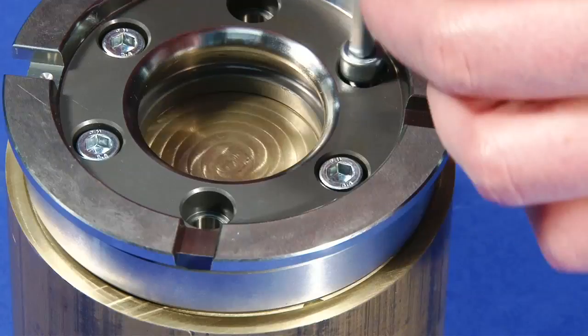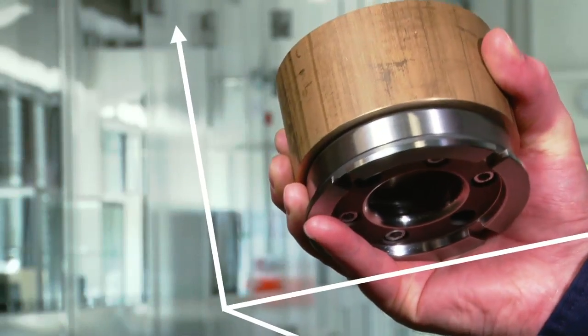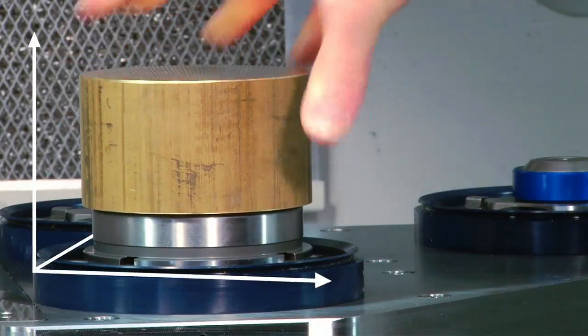The modular system for tools and parts is based on an ultra-precise zero-point clamping system that can be employed in all the machines in your process chain.